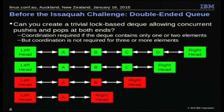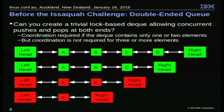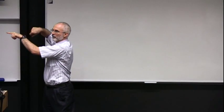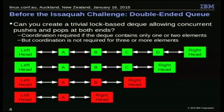But as soon as you get down to two elements, life gets hard. If you're careless about it, they'll both grab A and B, link things to each other, and it'll be a mess. The guy removing B will make the right head point to A, except the other guy removed it at the same time, so his left head points to B, and life gets very bad. Worse, if there's only one element and two threads try to dequeue it without synchronization, they might both get A or both decide the list was empty — both grossly illegal.